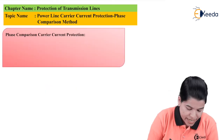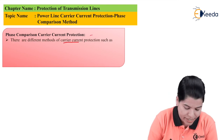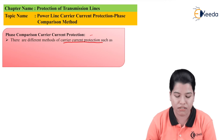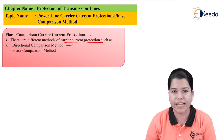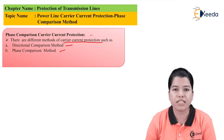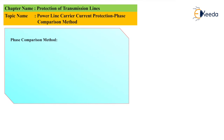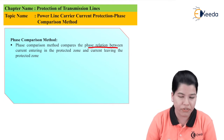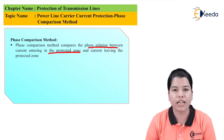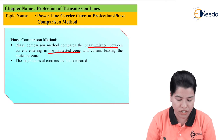Next is phase comparison carrier current protection. There are different methods of carrier current protection, such as the narrate comparison method and the phase comparison method. We are concerned with the phase comparison method. The phase comparison method compares the phase relation between current entering the protected zone and current leaving the protected zone. The magnitude of current is not compared. Phase comparison provides only the main protection, whereas backup protection should be provided in addition.